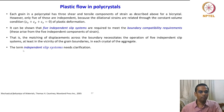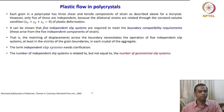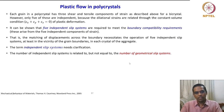Now we will concentrate on the term 'independent slip systems.' The number of independent slip systems is related to, but not equal to, the number of geometrical slip systems. When we say six components — three tensile, three shear — they are all geometrical slip systems, but they are not necessarily independent slip systems. That is valid for all crystal systems.